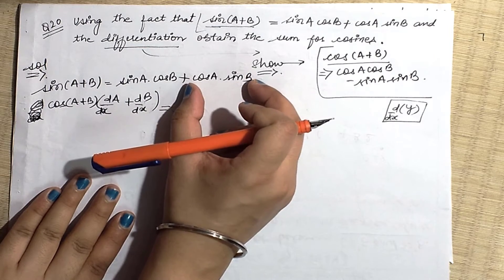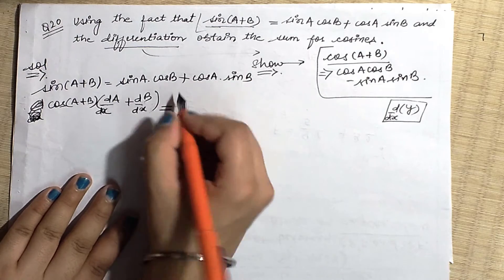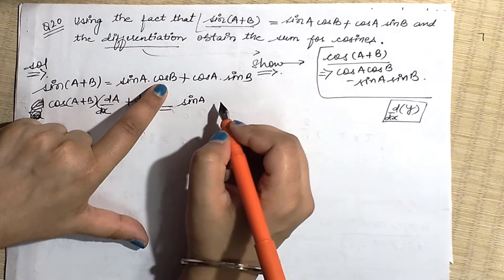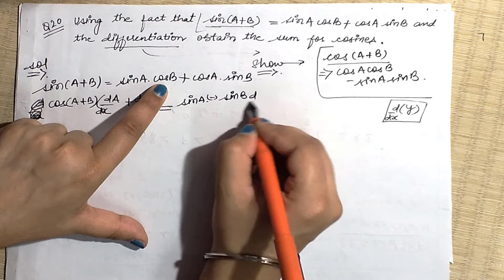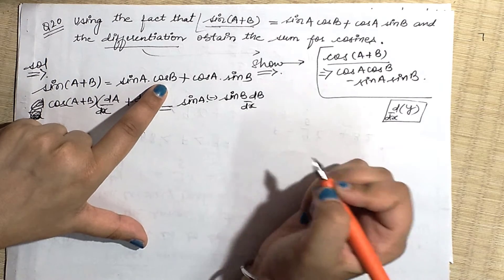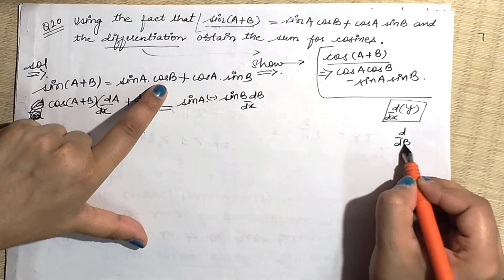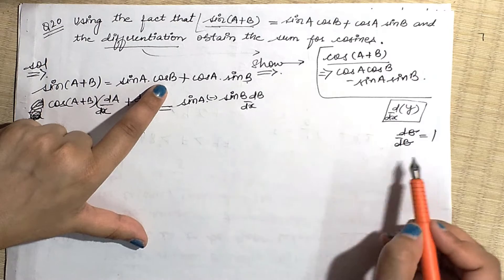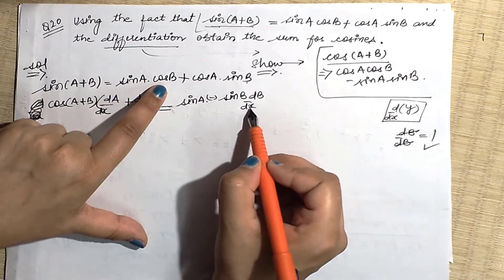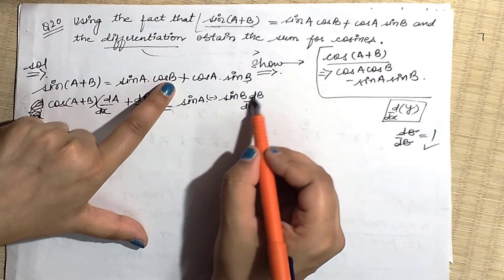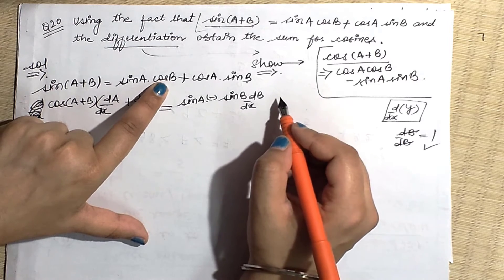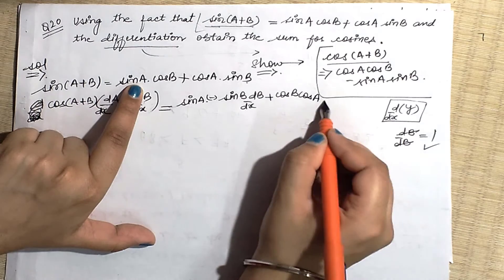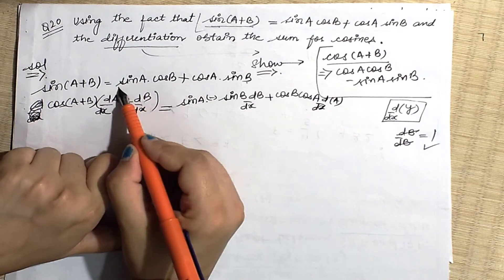When you differentiate sinA cosB using the product rule: keep the first function as it is (sinA), differentiation of cosB gives −sinB, and by chain rule we get db/dx. If we had differentiated with respect to b, b would cancel giving one — but here we differentiate with respect to x, so we get db/dx. Then the second part: cosB as it is, times the differentiation of sinA which gives cosA times da/dx.